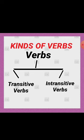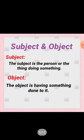Action words, or main verbs, are further divided into two kinds: transitive verbs and intransitive verbs. Before we start, you must know what a subject and object are. The subject is the person or thing doing something, and the object is the person or thing having something done to it.